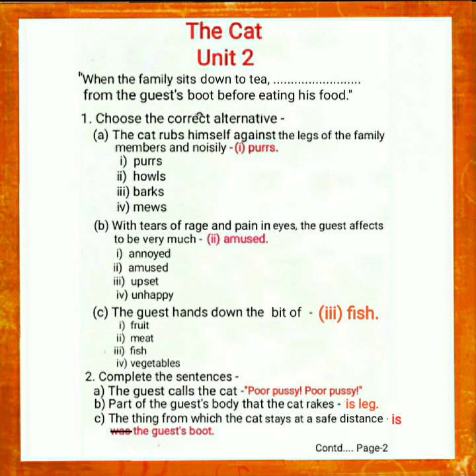Question No. 2: Complete the sentences. A. The guest calls the cat dash. The complete sentence will be: the guest calls the cat 'poor pussy, poor pussy'. B. Part of the guest's body that the cat rakes dash. The complete sentence will be: part of the guest's body that the cat rakes is his leg.